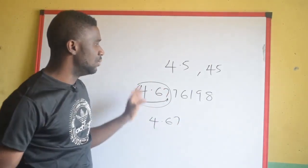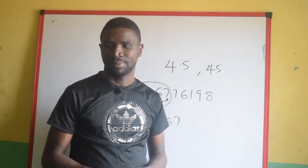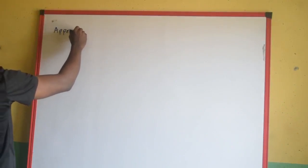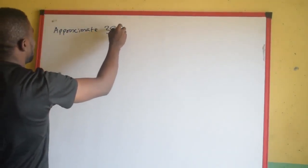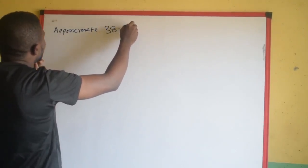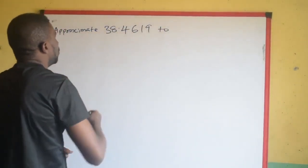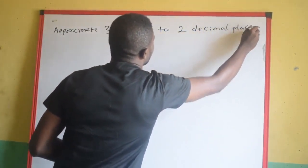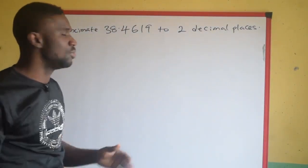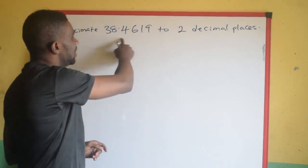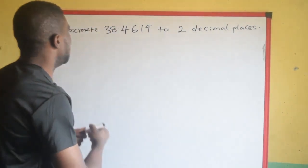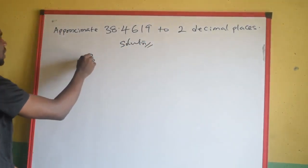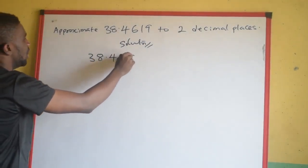So in that order, I will go ahead to explain decimal places. Imagine when you are given this question: approximate 38.4619 to 2 decimal places. This is the question. The question says approximate this to 2 decimal places, which means I don't want to see the entire number. But you can't just cut it without following the rules. Write your solution, then bring the question down: we have 38.4619.